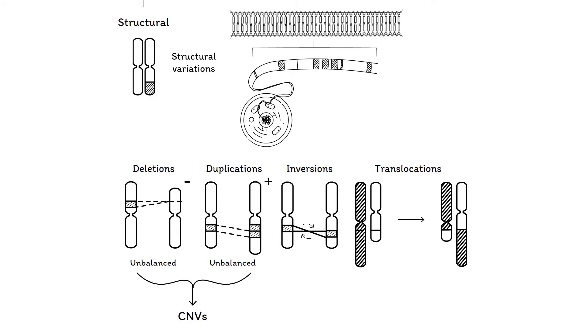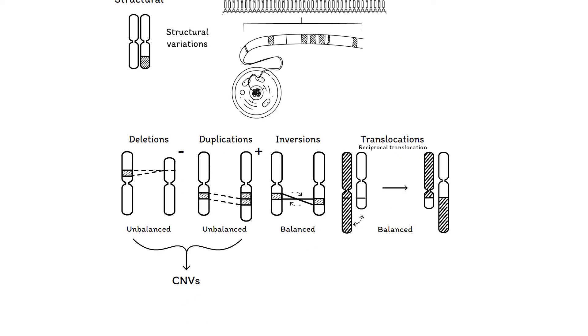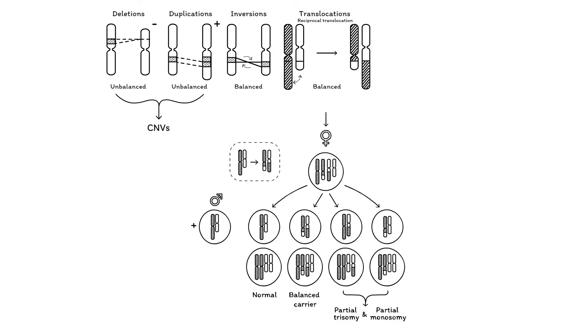Inversions are always balanced, as there is no change in the amount of DNA. Translocations can be both. When they are balanced, they are called reciprocal translocation, as parts of two different chromosomes exchange material. However, the carrier of a balanced reciprocal translocation can pass on the genetic material in an unbalanced manner.